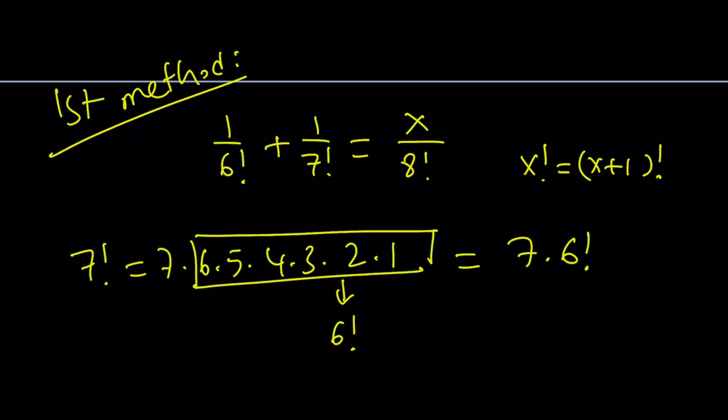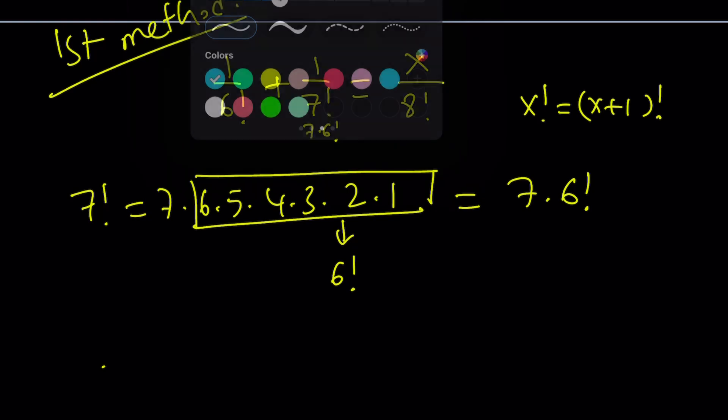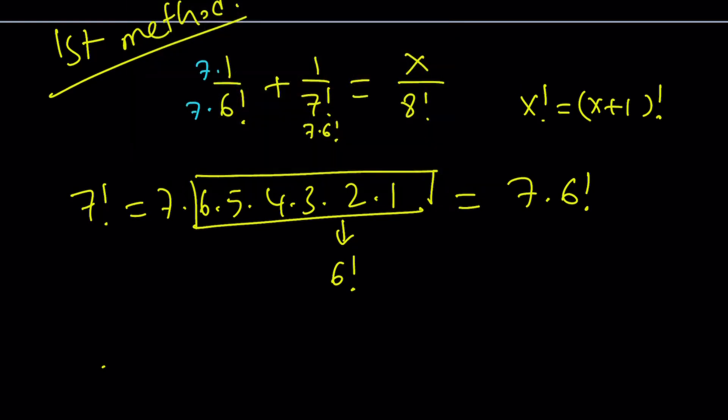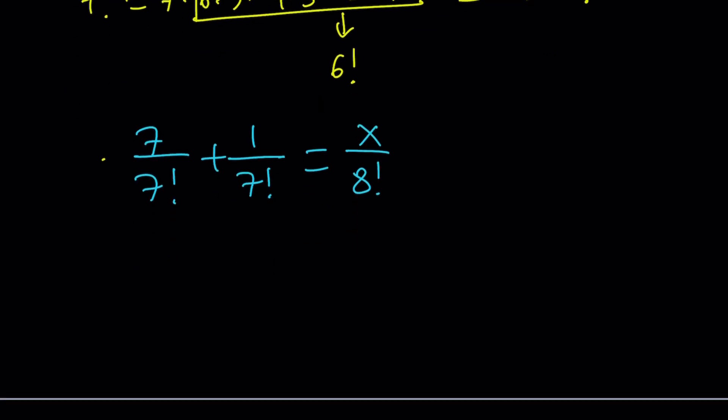Knowing that 7 factorial is 7 times 6 factorial helps us make a common denominator on the left hand side, because we just need to multiply by 7. So let's go ahead and do it. Multiply by 7 and multiply by 7. We get 7 over 7 factorial plus 1 over 7 factorial equals x over 8 factorial. And if you add the numerators, 8 over 7 factorial equals x over 8 factorial.